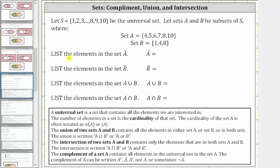We're first asked to list the elements of the set A complement, where the complement of set A contains all the elements in the universal set not in set A. The complement can be written using any of these notations here. So let's list the elements in the set A complement.